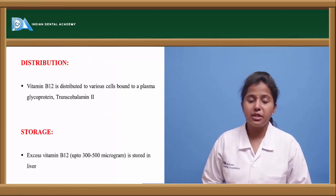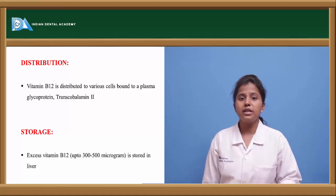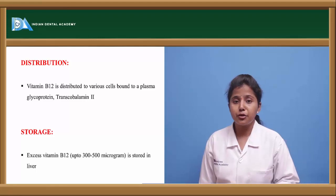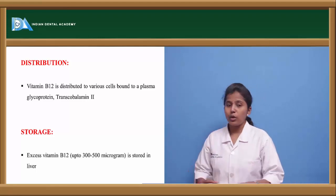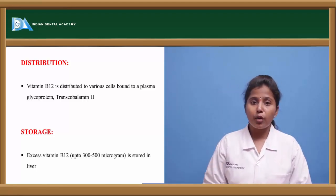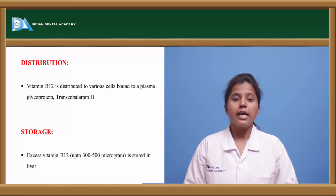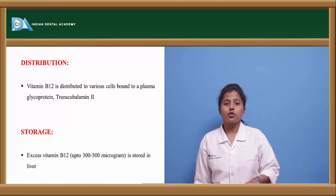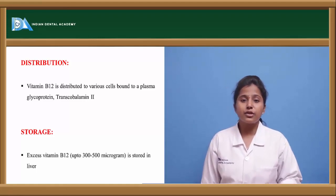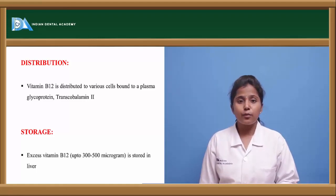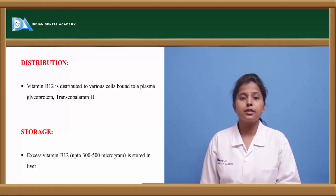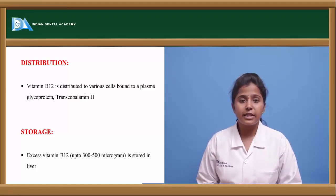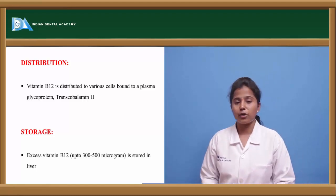Regarding distribution, vitamin B12 is distributed mainly in the form of transcobalamin-2. After absorption into the body, it undergoes biotransformation and forms transcobalamin-2, which is the active compound of vitamin B12. This transcobalamin-2 is then distributed all over the body, including each and every cell.